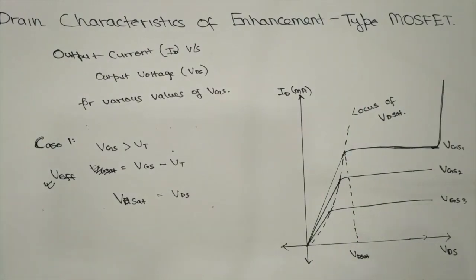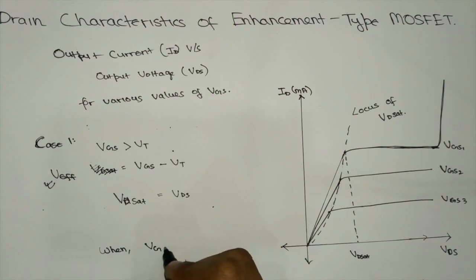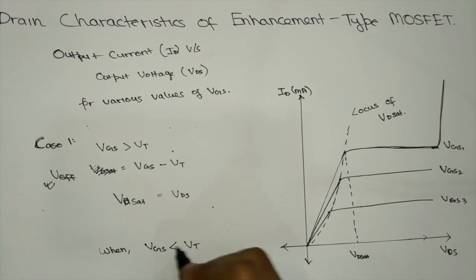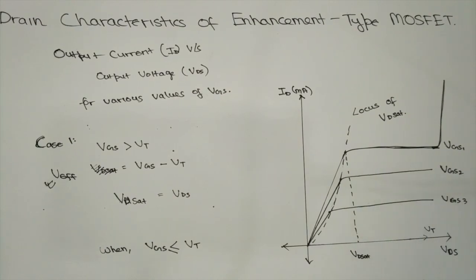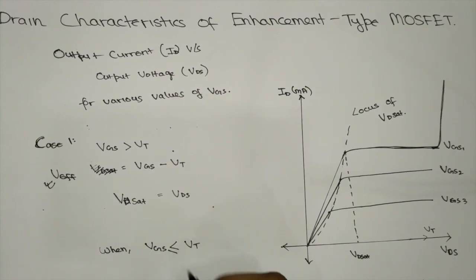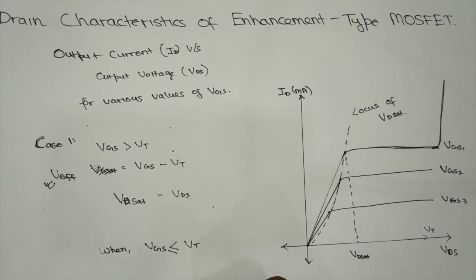We also need to remember that when VGS is less than or equal to VT, there is no significant current flowing through the circuit. So in the plot, if VGS equals VT, the current is zero, as VT is the threshold voltage — the minimum amount of voltage required for a significant amount of drain current to flow from drain to source.